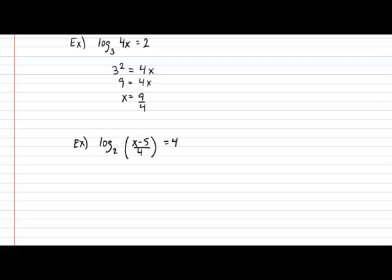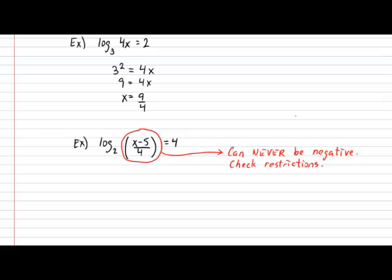The issue that you need to consider involves the object that you are logging. According to the restrictions placed on log expressions, this object can never be allowed to drop into the negative values. In other words, you must never forget to check the restrictions on the value of x. In this case, we always have to guarantee that x minus 5 all over 4 is larger than 0. Working on that gives us x minus 5 larger than 0, and therefore x must be larger than 5.